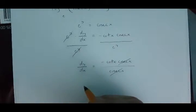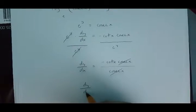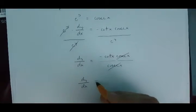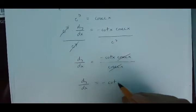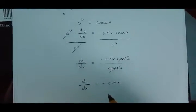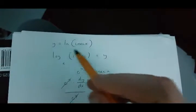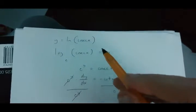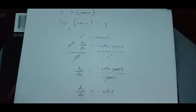And what we're left with is dy over dx equals minus cot x. And this is the derivative of y equals ln cosec x.